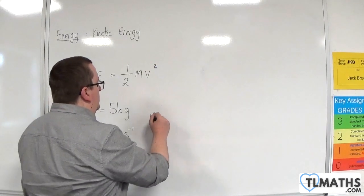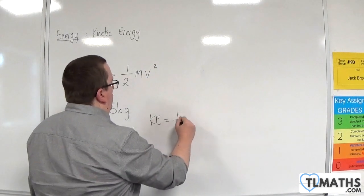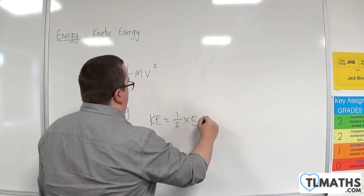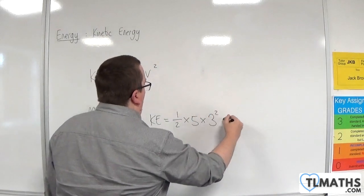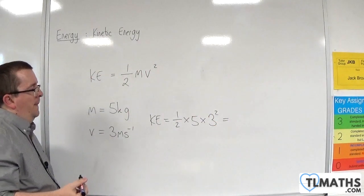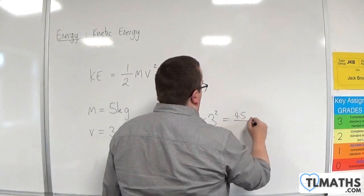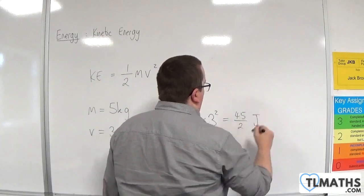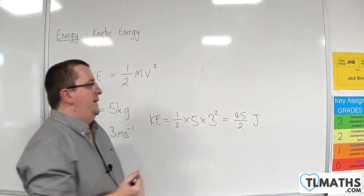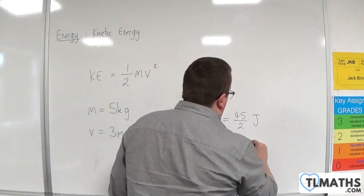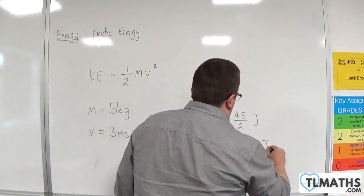Well, very easy. So the kinetic energy would be one-half times m times v squared. OK, so 45 over 2, so 45 halves joules, or 22.5 joules.